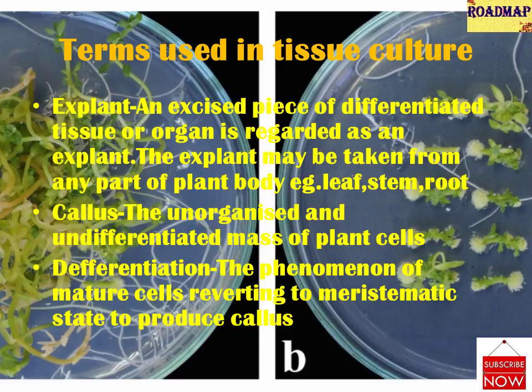Re-differentiation: the ability of callus cells to differentiate into a plant organ or whole plant is called re-differentiation. There is also the term totipotency — the ability of individual cells to develop into a whole plant, referred to as cellular totipotency. The inherent characteristic features of plant cells, namely de-differentiation and re-differentiation, are responsible for the phenomenon of totipotency.